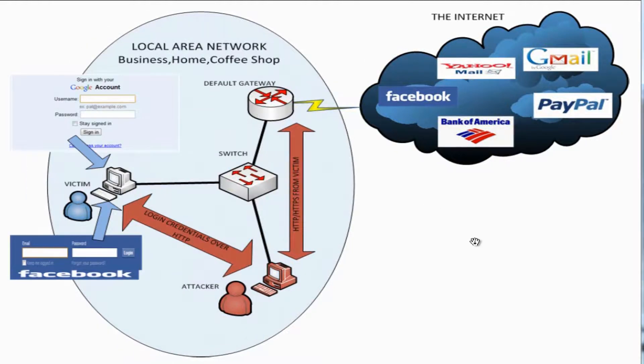SSLstrip then watches all HTTP traffic from the victim. It keeps a map of these connections and forces the use of HTTP between the victim and the attacker, while using HTTPS between the attacker and the web server. This causes the victim to send login credentials unencrypted over HTTP to the attacker. The attacker then forwards these intended HTTPS connections to the web server using HTTPS, so the connection looks secure to the web server.